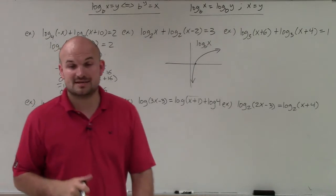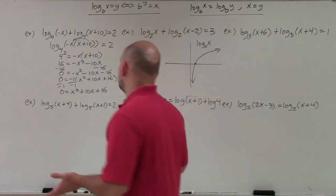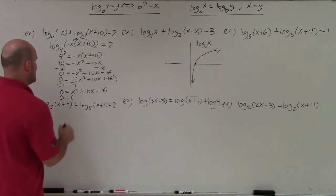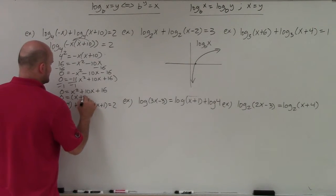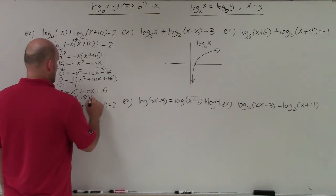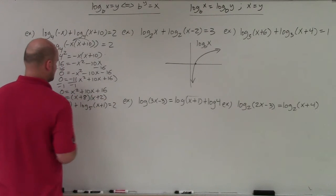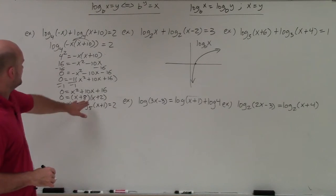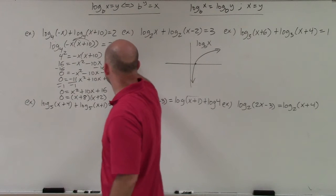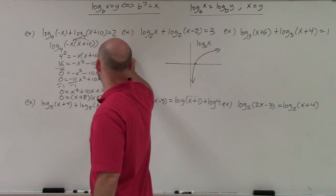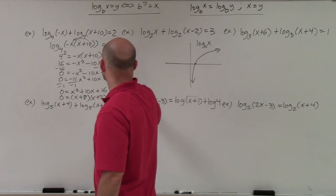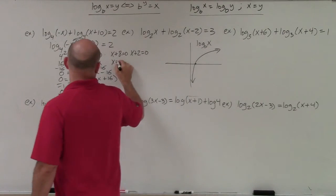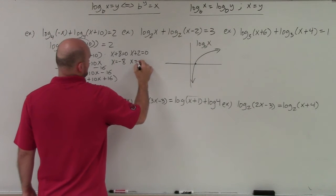To factor x squared plus 10x plus 16, I need two numbers that multiply to give me 16 and add to give me 10. That's 8 and 2. So I get 0 equals x plus 8 times x plus 2. Using the zero product property: x plus 8 equals 0 and x plus 2 equals 0, giving me x equals negative 8 and x equals negative 2.